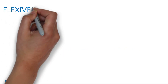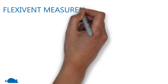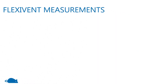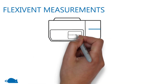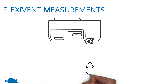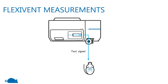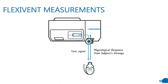The flexi-vent uses an active measurement technique. Using this technique, test signals are introduced to the subject's airways, and through changes in pressure, volume, and flow, the mechanical properties of the respiratory system can be measured.